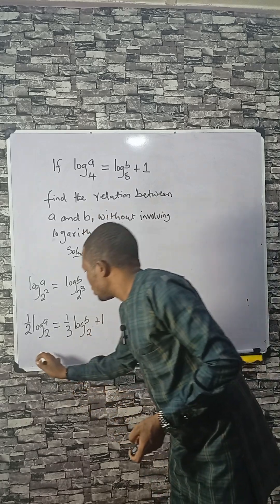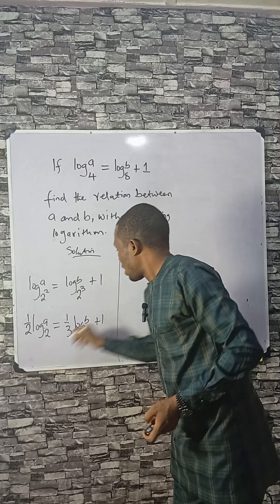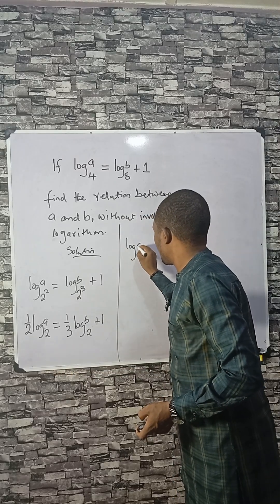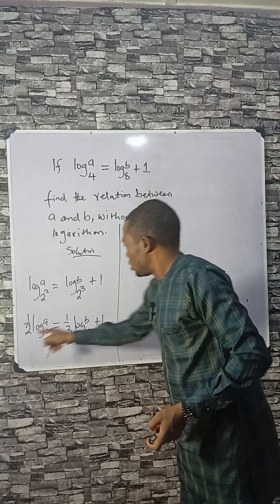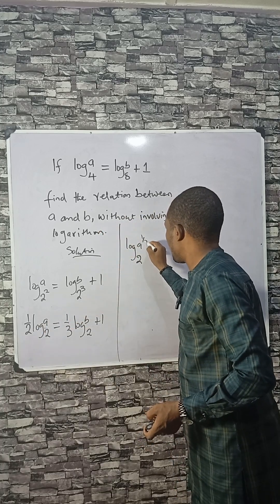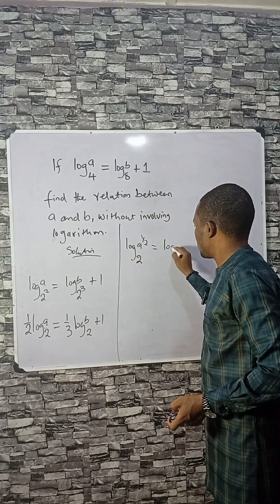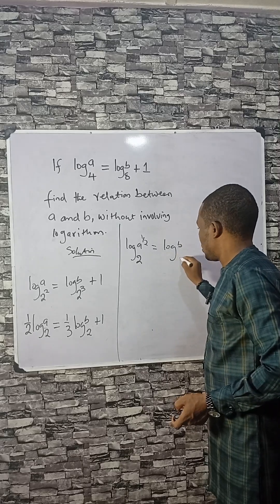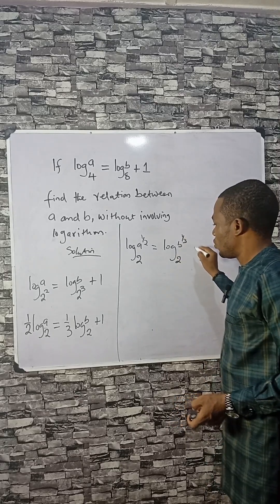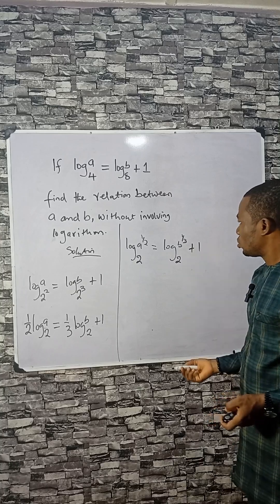Now, we can write this as: log of A base 2 raised to the power of 1/2 equals log of B base 2 raised to the power of 1/3, plus 1.